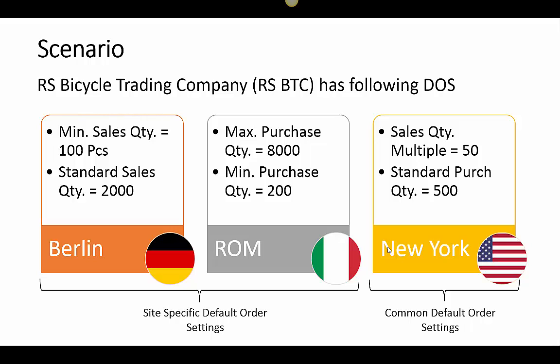For Berlin site the minimum sales quantity is 100 pieces and standard sales order quantity is 2000 pieces, meaning we generally receive orders in 2000 pieces. For Rome site, maximum purchase quantity is 8000 because of warehouse capacity and minimum purchase quantity is 200. For New York site, sales quantity multiple will be 50, meaning we always receive orders in multiples of 50 — so an order for 120 pieces would be rounded to 150 — and standard purchase order quantity is 500.